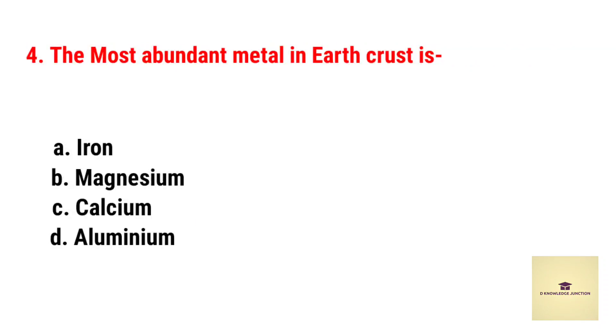The most abundant metal in the earth's crust is? Correct answer is aluminium.